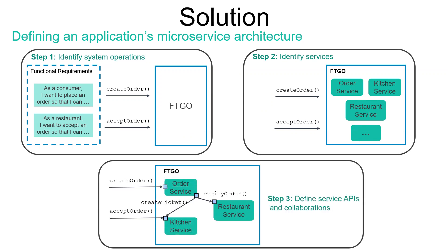The third step is to define the API of each service. To do that, you assign each system operation identified in the first step to a service. Basically, a service might implement an operation entirely by itself. But if that is not the case, it might need to collaborate with other services. In that case, you have to determine how these services will collaborate.